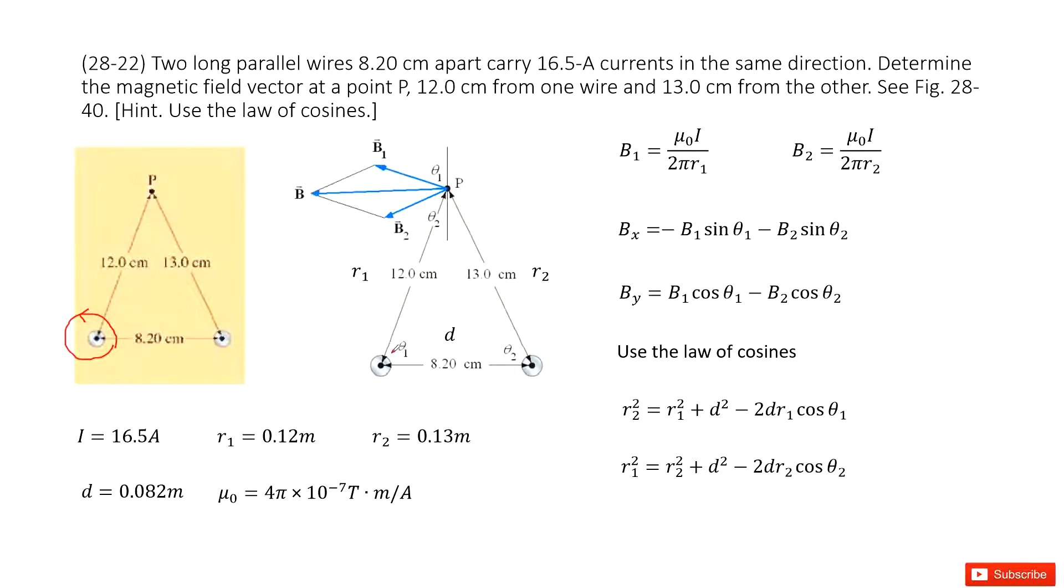If we consider this angle as theta, this angle must be theta. Why? Because you can see this theta, this red one plus this green one equals 90 degrees. Do you agree?